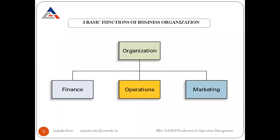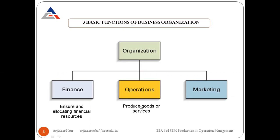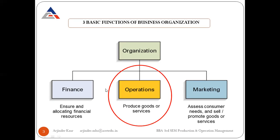Any organization has three main functions: finance, operations, and marketing. We have one more function called human resources, which is a supporting function because for performing each of these functions we need people. Finance ensures and allocates financial resources, operations deals with producing goods or services, and marketing is about assessing consumer needs and selling or promoting goods or services.